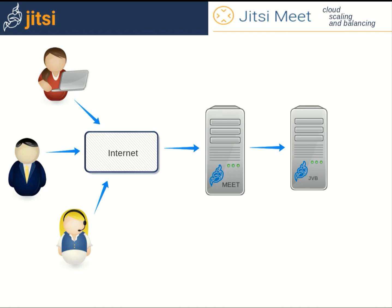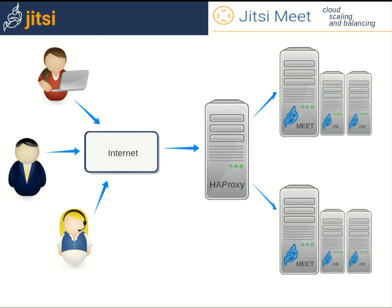In that scaling setup, we always have a video bridge ready to host a new conference, because if all the bridges are busy, the system will quickly launch a new video bridge. But we still have a point of failure, and it's in a big and important part of the system. If the Meet server fails, no matter how many video bridges we have and how load balanced they are, no conferences are possible. So we need to have a spare Jitsi Meet server in case the first one fails.